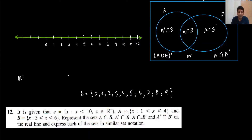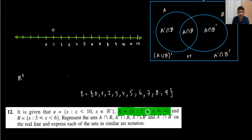Moving to part A: set A is defined as X such that X is in the range from 1 to 4. So I will draw a circle at 1 and not fill it, because this is only greater than. And at 4 I will draw a circle and fill it, because it includes equals to 4. This is the range for set A.